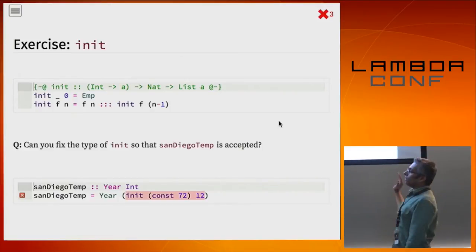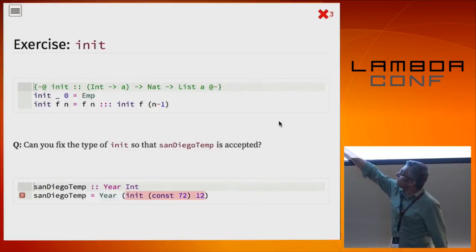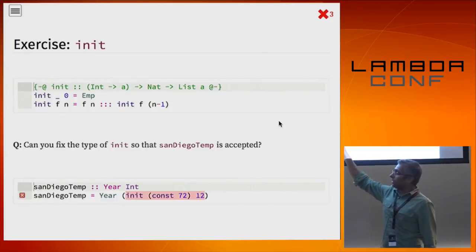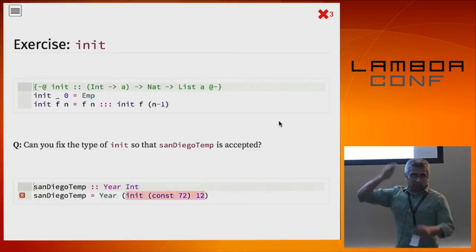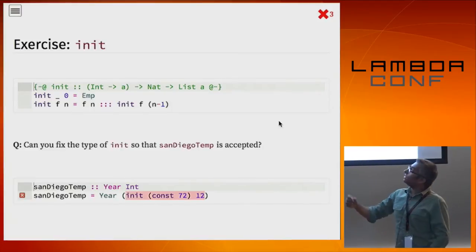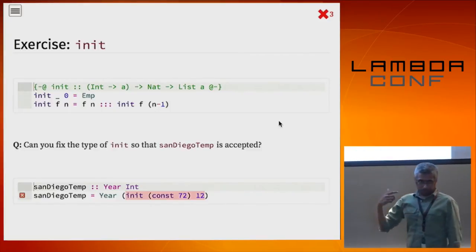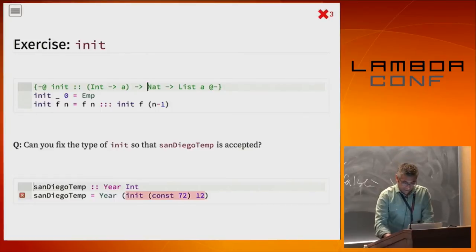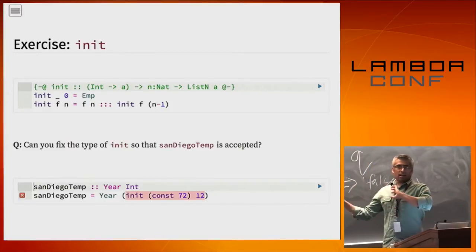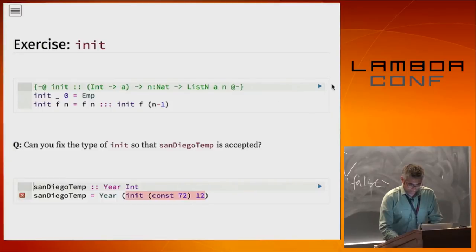Init: I didn't want to type out all 12 months, so here's the San Diego weather — the average weather every month is around 72. So year_init = init (const 72) 12. The init function gives it a function from Int to A and a Nat, and you get back a list of that size. Init of zero is Emp, init of f n just creates the list where each element is f applied to its index. The right type for init: given n : Nat, it produces ListN A n — a list of exactly size n.